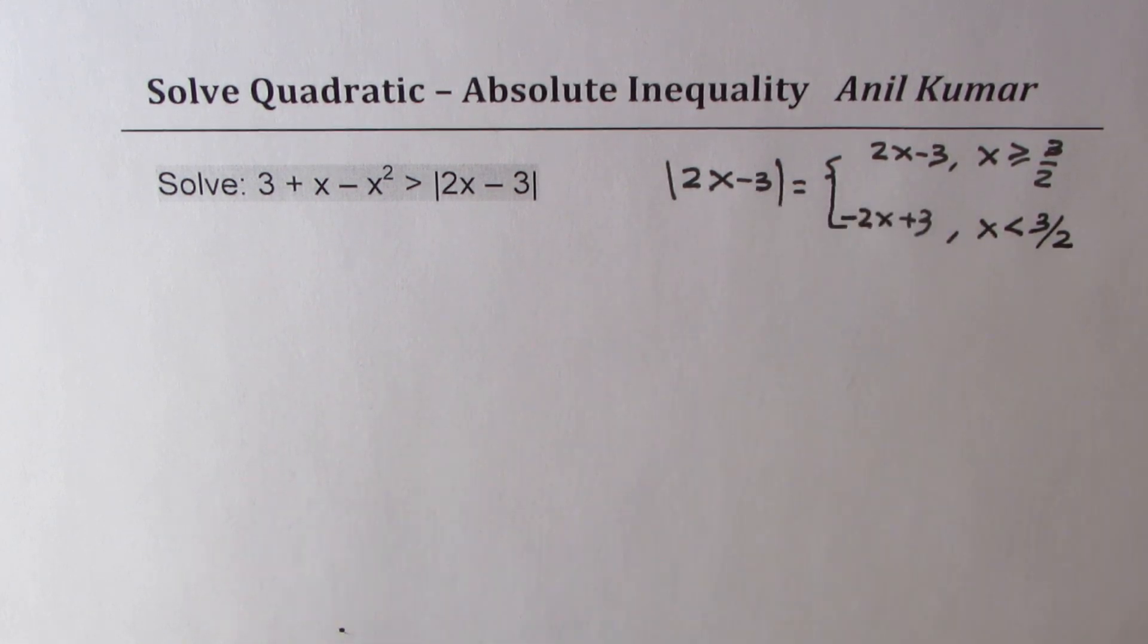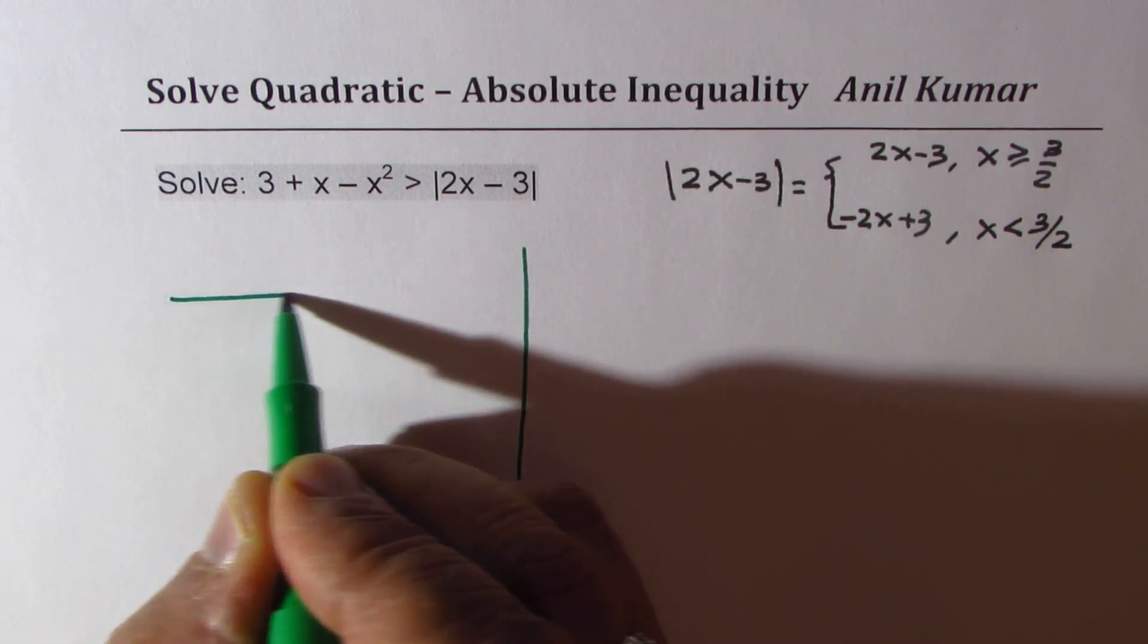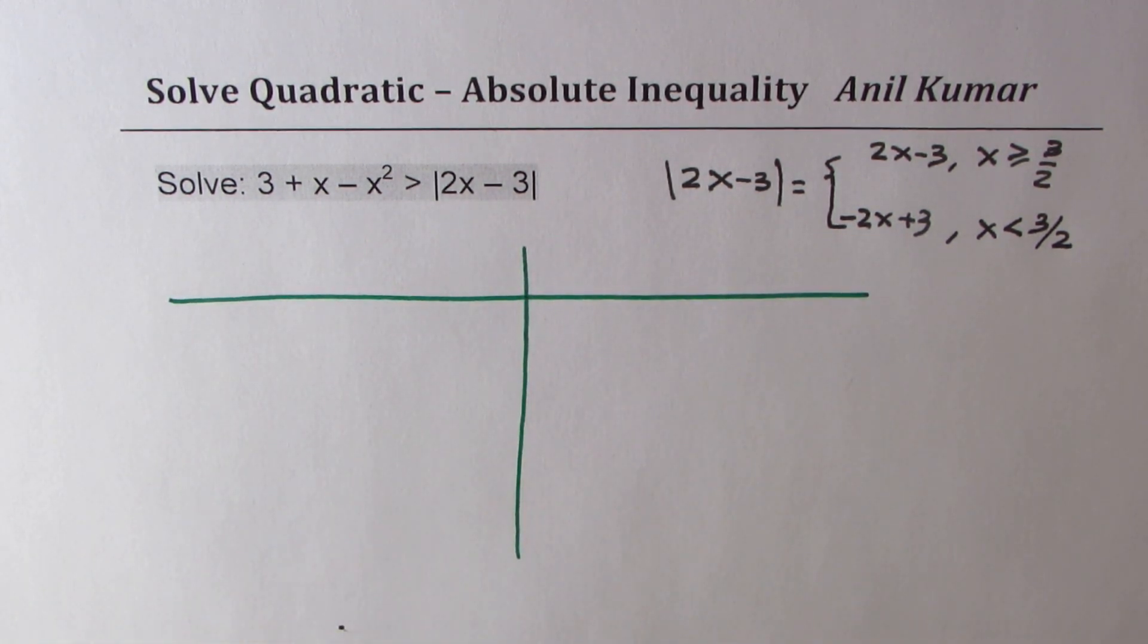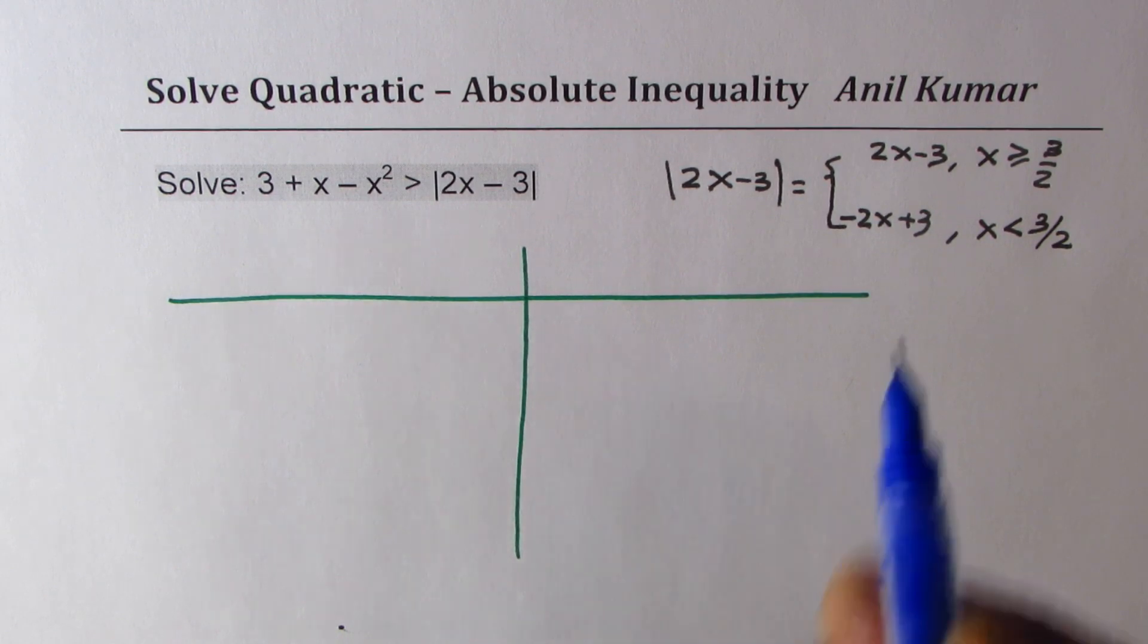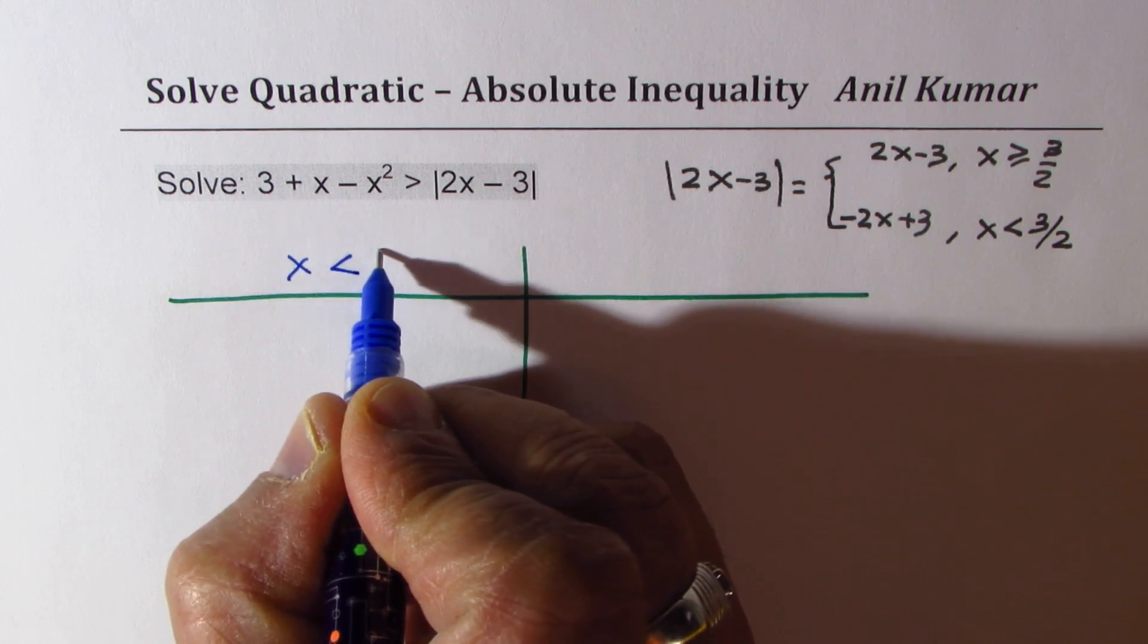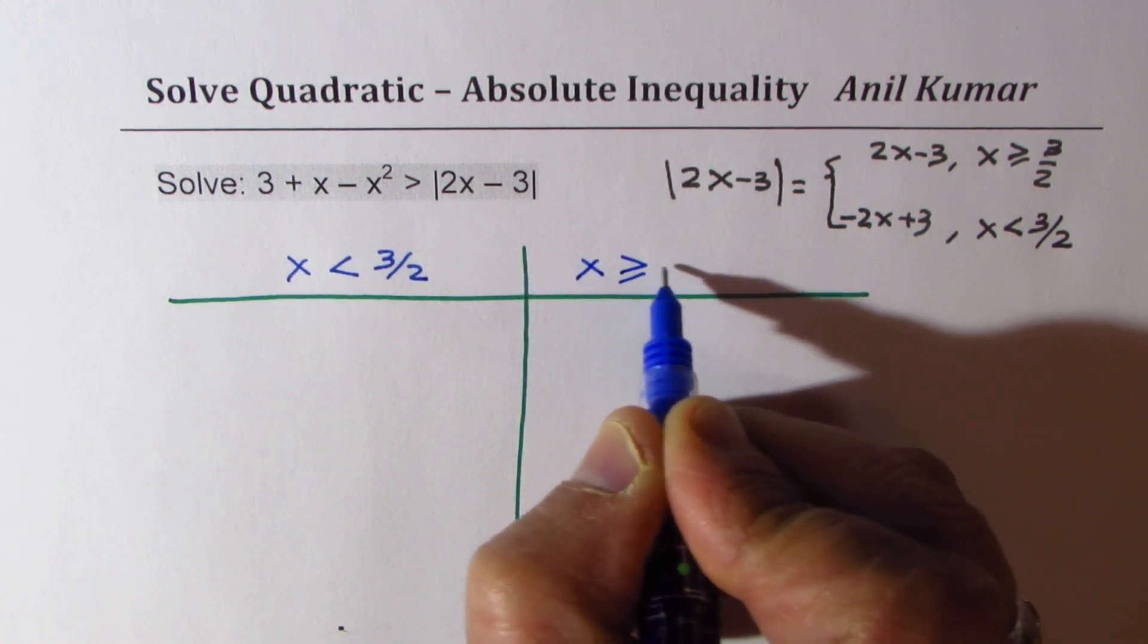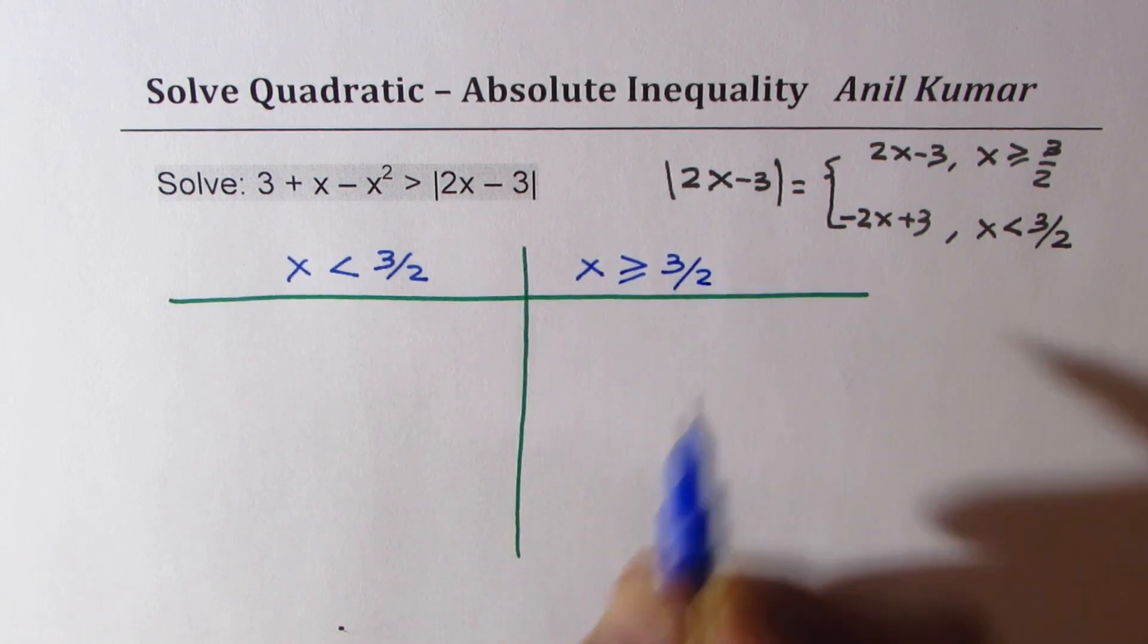So that is how every absolute function should be treated. So this really means that we have to solve inequality in two parts. One, for the interval when x is less than 3 by 2, that is 1.5, and the other when x is greater than equal to 3 by 2. So let us take the interval when x is less than 3 by 2 on the left side, and x greater than equal to 3 by 2 on the right side.